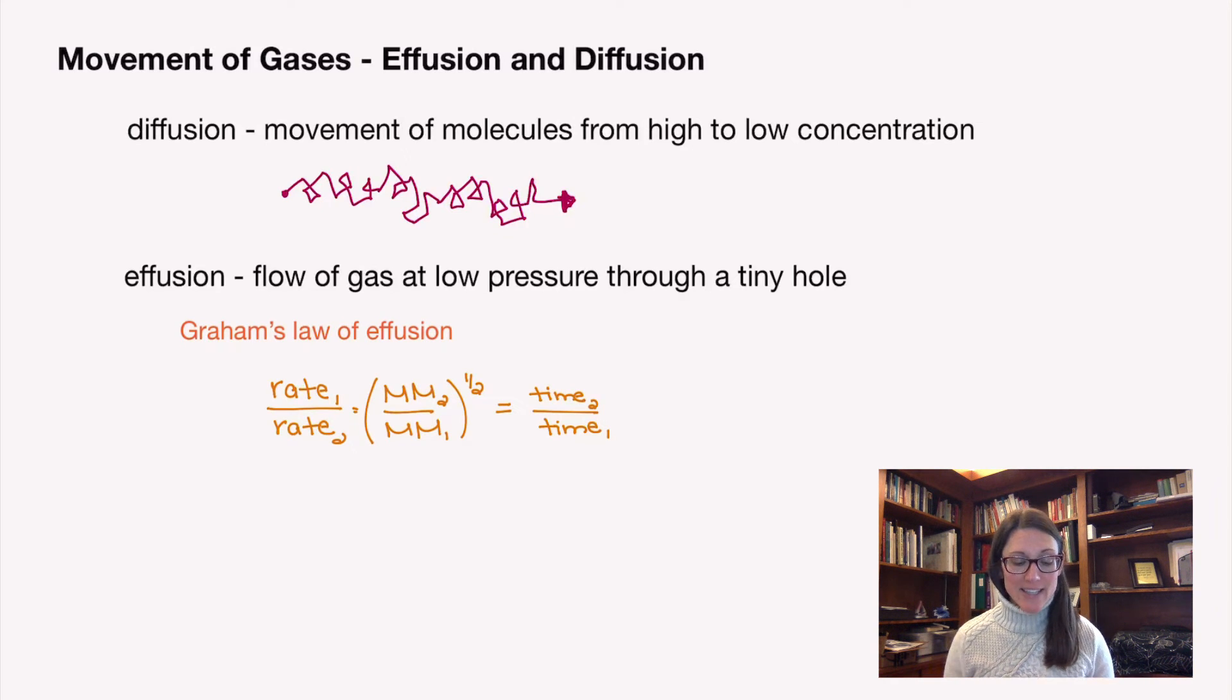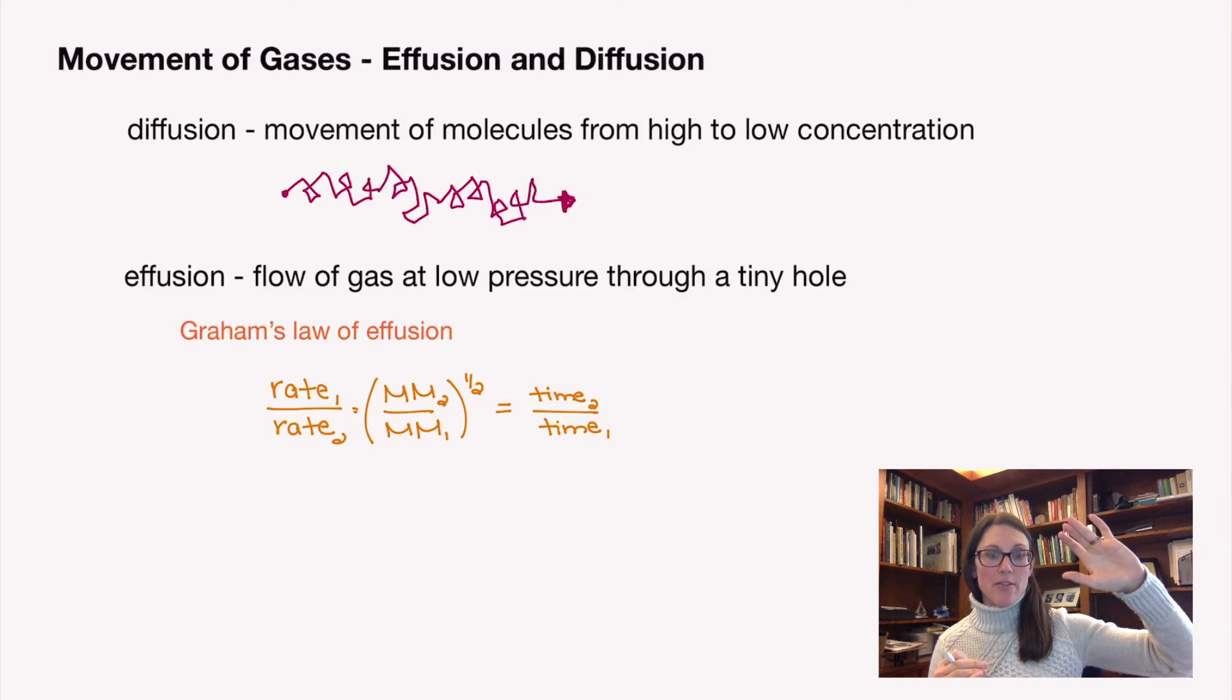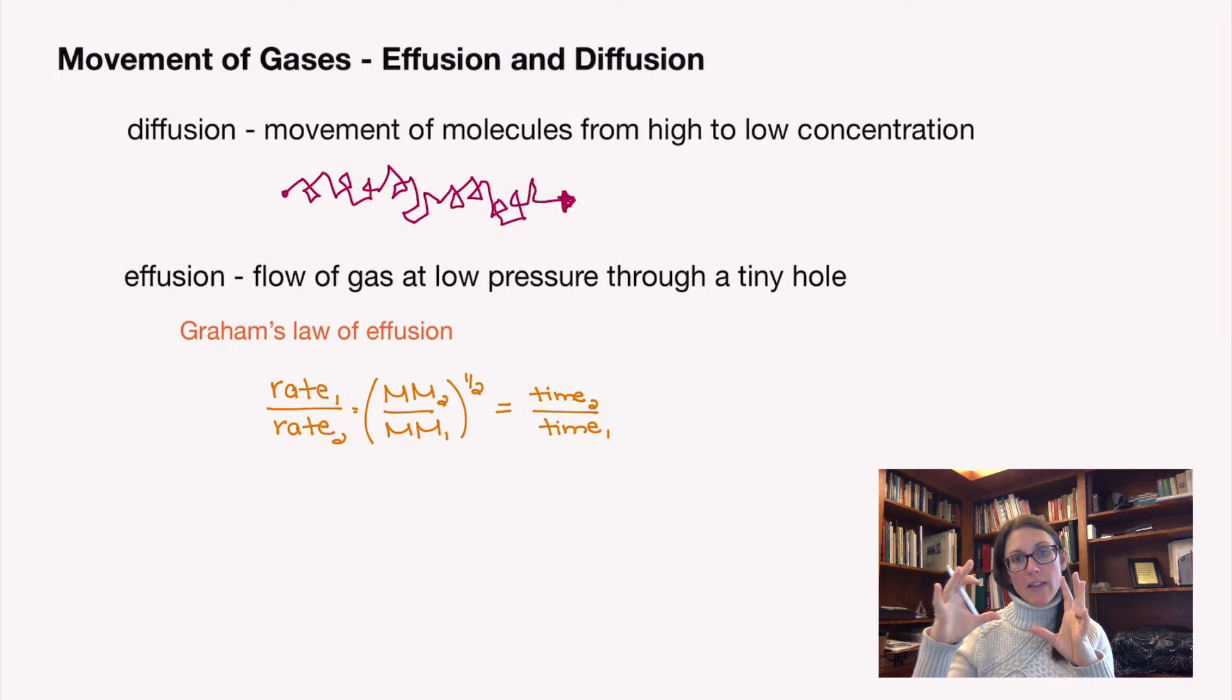But what this says is that the rate of effusion of two different particles, when you compare them, it depends on the square root of the relative molar masses. But notice that on the equation, I've got rate one over rate two, and then in the molar mass part, it's molar mass two over molar mass one. What this basically says is that the faster molecule will have a higher rate of effusion because it'll have a lower molar mass.